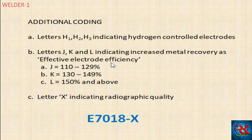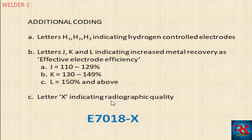The term is very important. J is 110 to 129%, K is 130 to 149%, and L is equal to 145%. The last letter X indicates radiography quality.